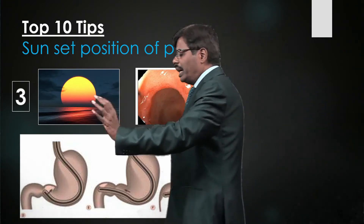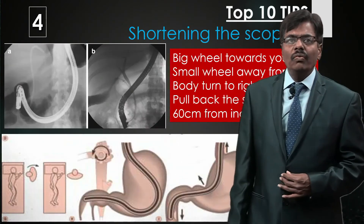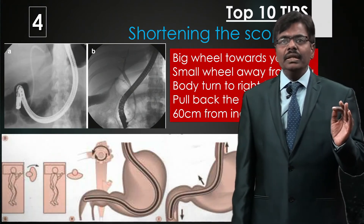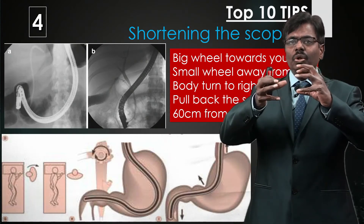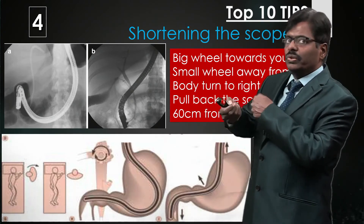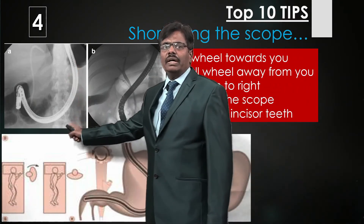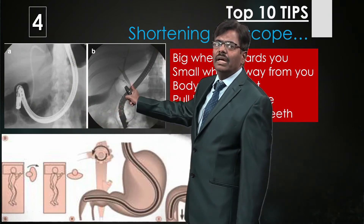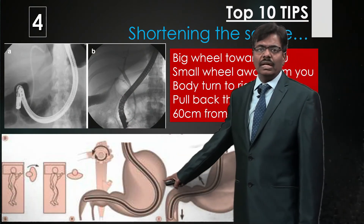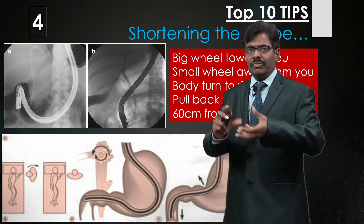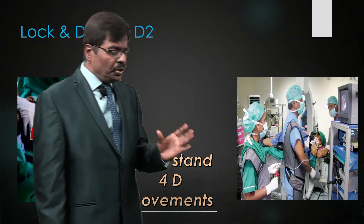Shortening the scope happens at the superior duodenal angle level. The maneuver is: big wheel towards you, small wheel away from you, turn your body to one side, and shorten the scope. Monitor as what was a long loop along the greater curvature becomes a short hockey-stick shape hugging the lesser curvature. This is exactly the wheel-and-body movement needed at the sharp fold, creating the typical hockey-stick appearance.